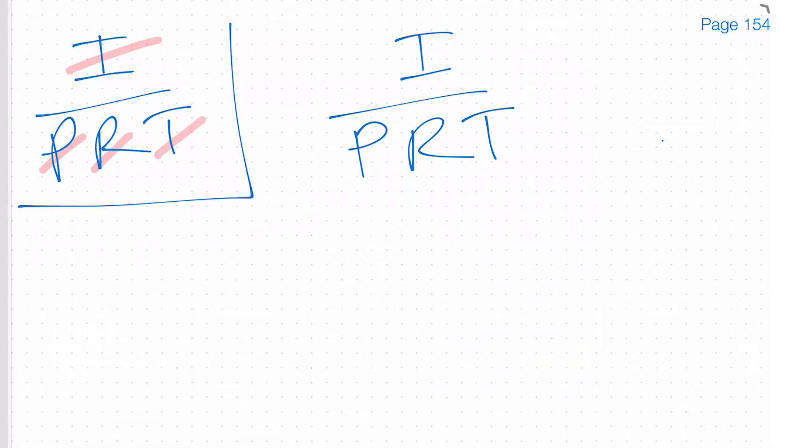So the question might be what is the interest rate if someone borrows X amount and they pay this much interest and they have a loan for X amount of years. What is the interest rate that they would pay? So if it's the interest rate that we need to find then the rate would be equal to the rest of this formula. So now this becomes the interest divided by the principle multiplied by the time.